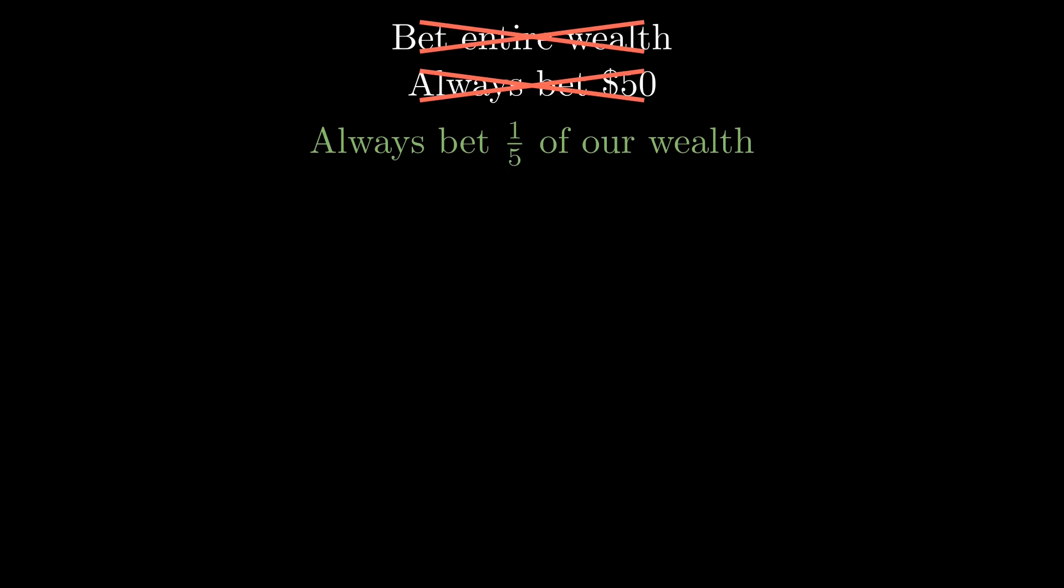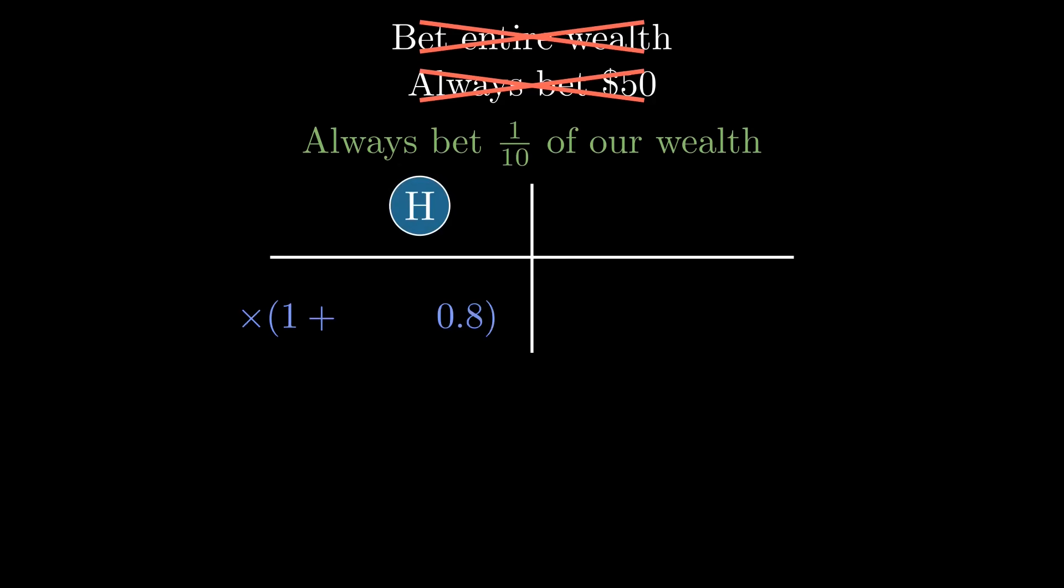You might be wondering, what if we always bet a fraction of our wealth, say 1/5th or maybe 1/10th? On heads, our wealth will be multiplied by 1 plus 0.8 times 1/10th. On tails, our wealth is multiplied by 1 minus 0.5 times 1/10th.